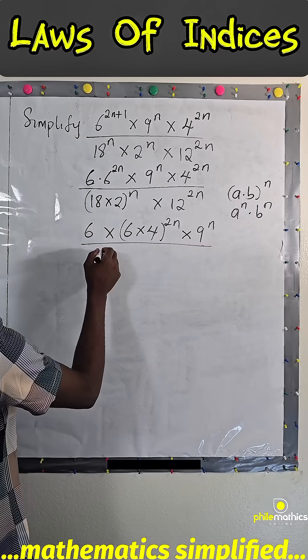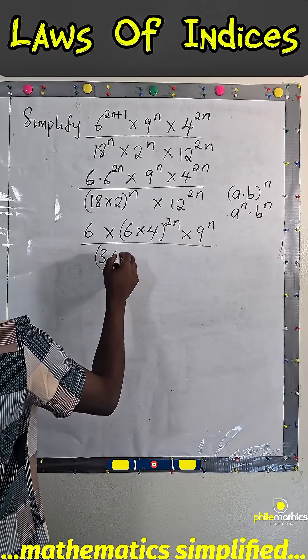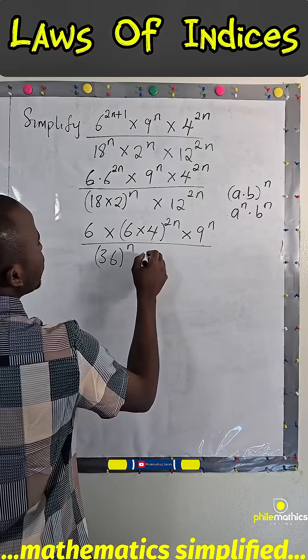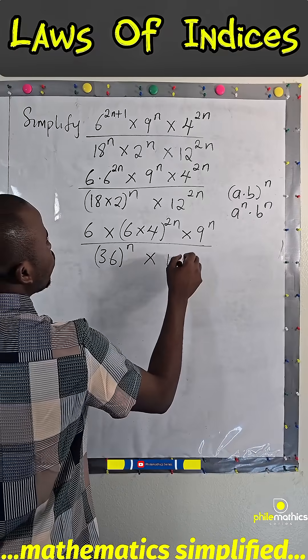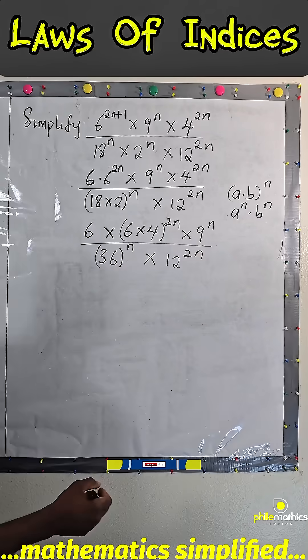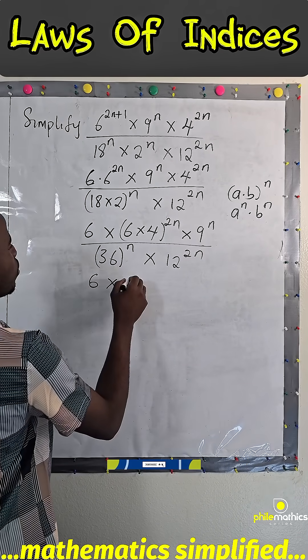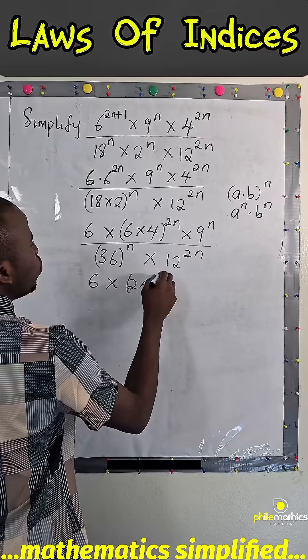over 18 times 2 is 36 to power n times 12 to power 2n. So this is 6 times 24 to power 2n